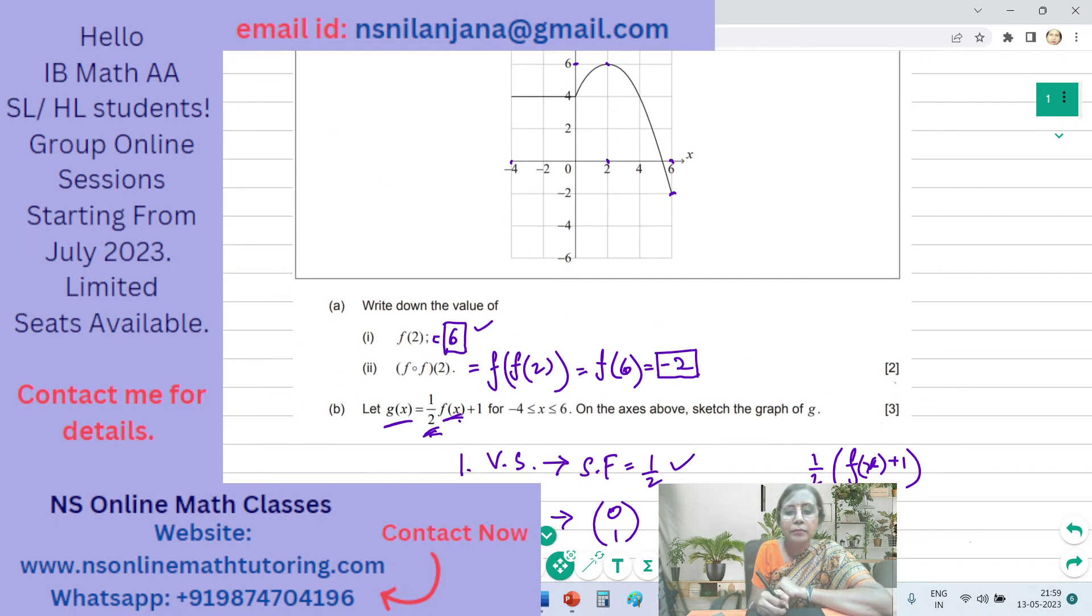This is the graph. What are the coordinates of this point? Minus 4 comma 4. The Y coordinate is 4. Half of 4 is 2, 2 plus 1 is 3.